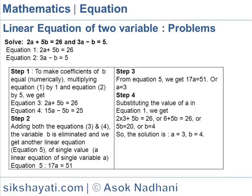In step two, adding both equation three and equation four, the variable b is eliminated and we get equation five: 17a equals 51.